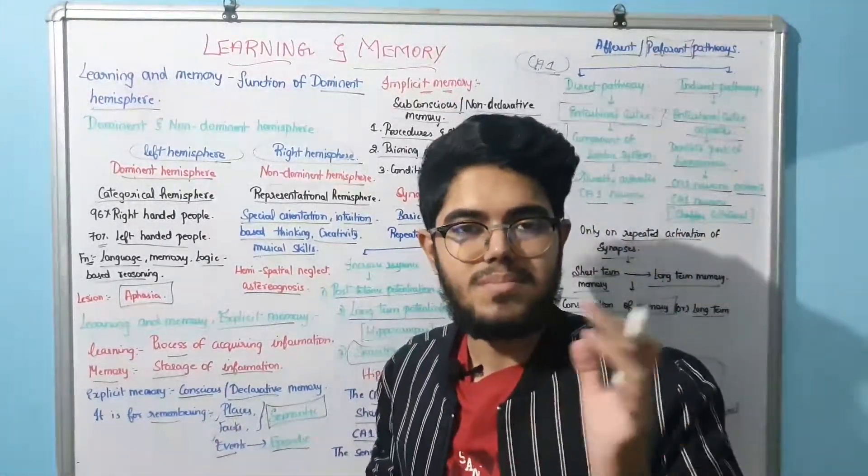Explicit memory is conscious memory — also called declarative memory. In a viva, when professors ask you questions and you answer consciously about places, facts, or events, that is explicit memory. When you remember places and facts, it is called semantic memory.